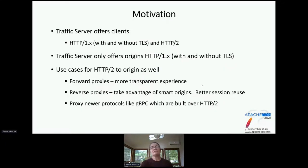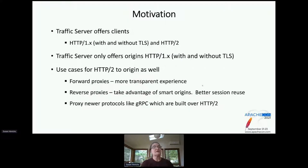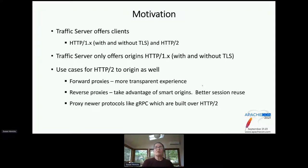What is our motivation? Traffic Server today, in current releases, offers clients both HTTP1X with and without TLS and HTTP2. But to origin, Traffic Server only offers HTTP1X with and without TLS. In the reverse proxy case, you want to roll out new protocols to the client first, and your origins will deal with whatever. But there are use cases for H2 to origin as well. For forward proxies, it gives a more transparent experience. For reverse proxies, origins can be smarter and do a lot more with reusing connections. And then there's the ability to proxy newer protocols like gRPC, which are inherently built over HTTP2. Currently, Traffic Server cannot proxy a gRPC request because it requires H2 on both sides.